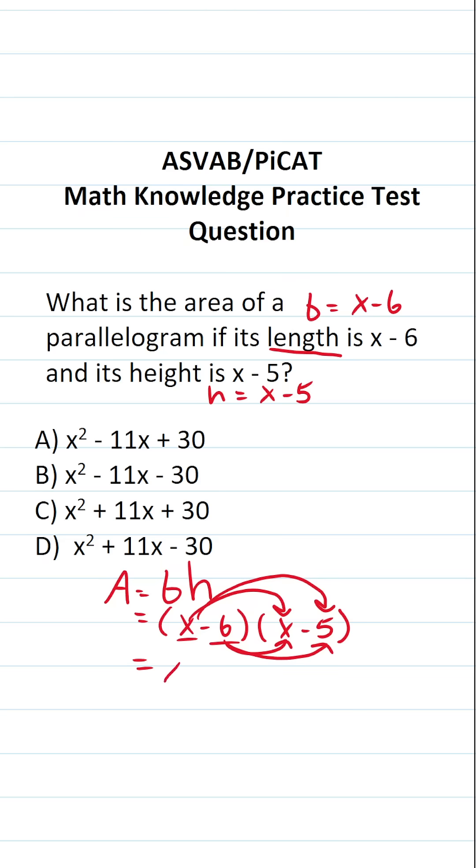x times x is going to be x squared. x times negative 5 is negative 5x. Negative 6 times x is negative 6x. Negative 6 times negative 5, a negative times a negative is going to be a positive. Negative 6 times negative 5 is positive 30.